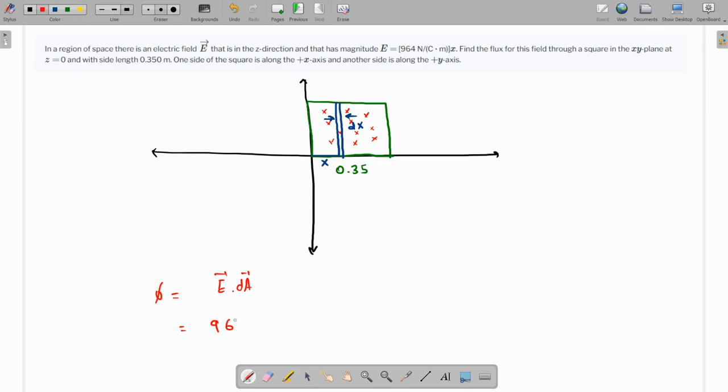E is 964X. DA, this is a rectangle so that's going to be length times width. So the length is 0.35 and the width is DX. So that's going to be 0.35 DX.